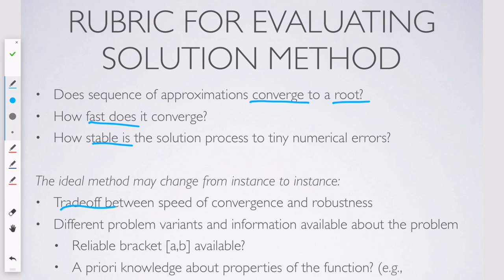And there are different problem variants. And that can affect what's your preferred solution method. And some of these problem variants include if you have or need to have a reliable bracket around the root. Like, if you need to know my root is between these two particular numbers.